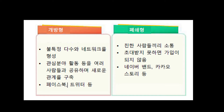SNS를 개방형과 폐쇄형으로 구분해보면, 개방형은 불특정 다수, 모르는 사람들과도 관심 분야를 공유하는 것으로 대표적인 것으로는 페이스북과 트위터가 있고요. 폐쇄형은 친한 사람들끼리 소통하는 것으로 초대받지 못하면 가입할 수가 없습니다. 대표적인 것으로는 네이버밴드나 카카오스토리 등이 있습니다.